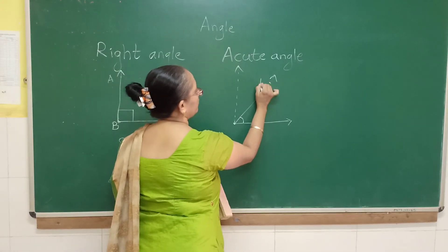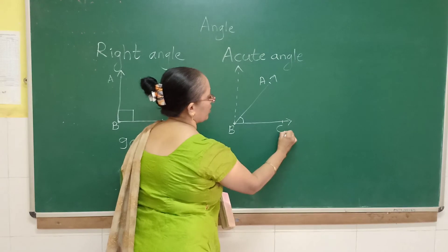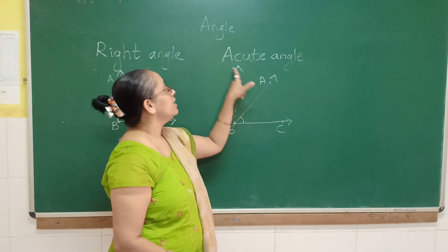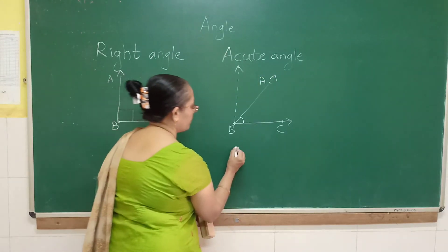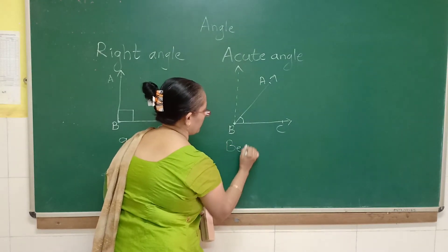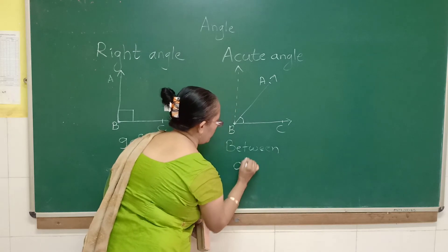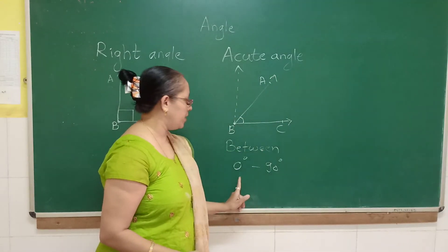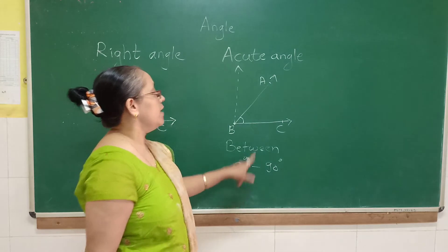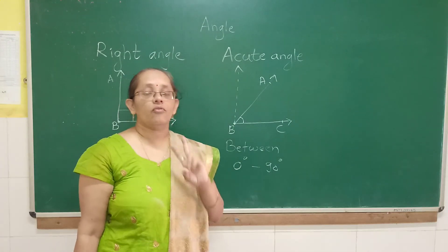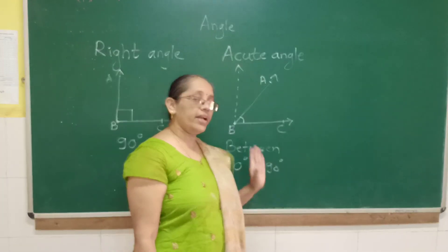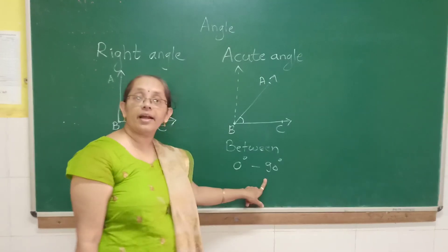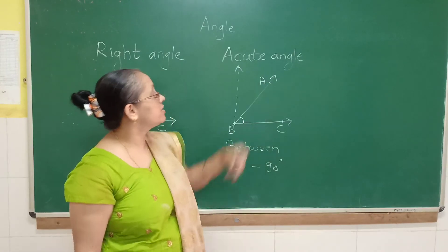Angle ABC or angle CBA is an acute angle. The measure of an acute angle is between 0 degrees to 90 degrees. For example, if an angle measures 45 degrees, 17 degrees, 85 degrees, or 89 degrees, it is an acute angle.